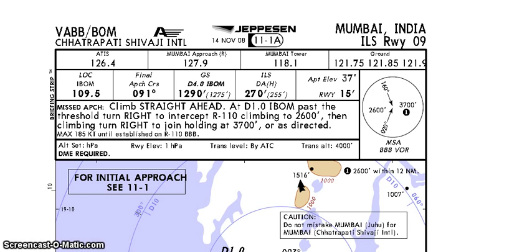Missed approach procedure is to climb straight ahead. At 1 ILS DME, pass the threshold, turn right to intercept radial 110, climbing to 2600 feet. Then climbing turn right to join holding at 3700 feet or as directed by ATC. Maximum speed is 185 knots until established on radial 110 — Bravo Bravo Bravo Bravo.